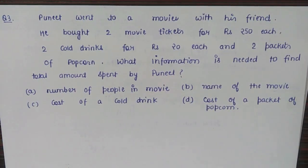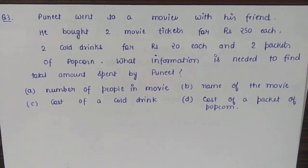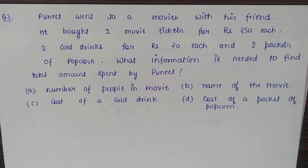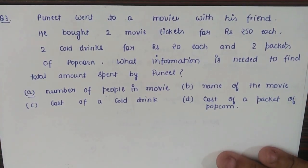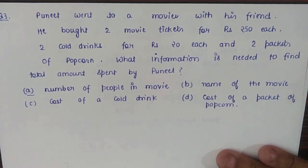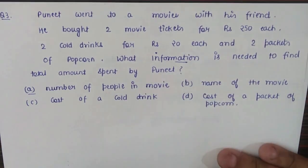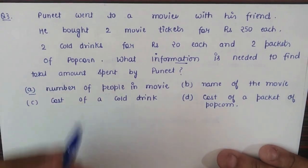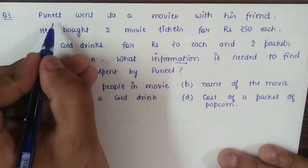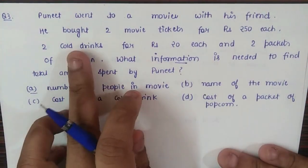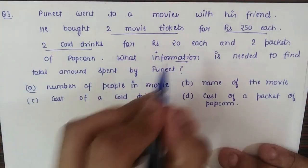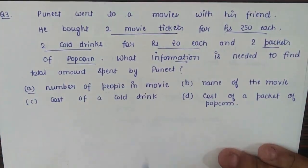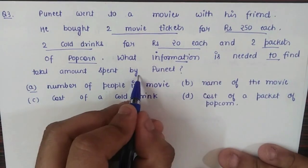Question number 3 is a bit different — I've included the options for this one. You don't have to calculate anything; you have to figure out what information is missing. Puneet went to a movie with his friend. He bought two movie tickets for rupees 250 each, two cold drinks for rupees 20 each, and two packets of popcorn.